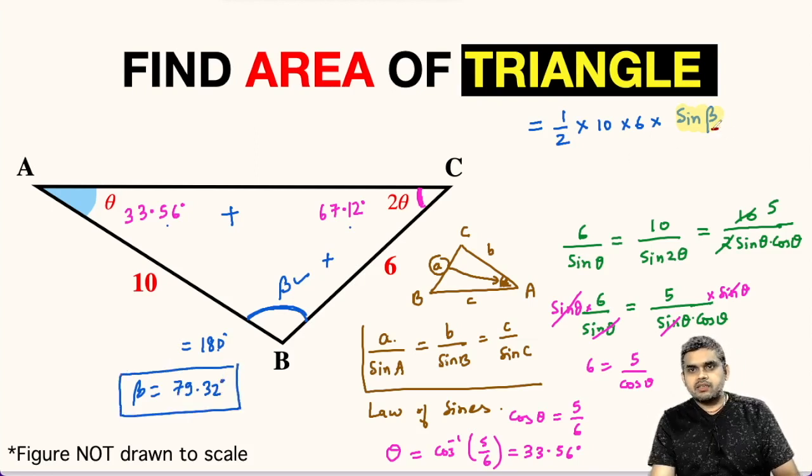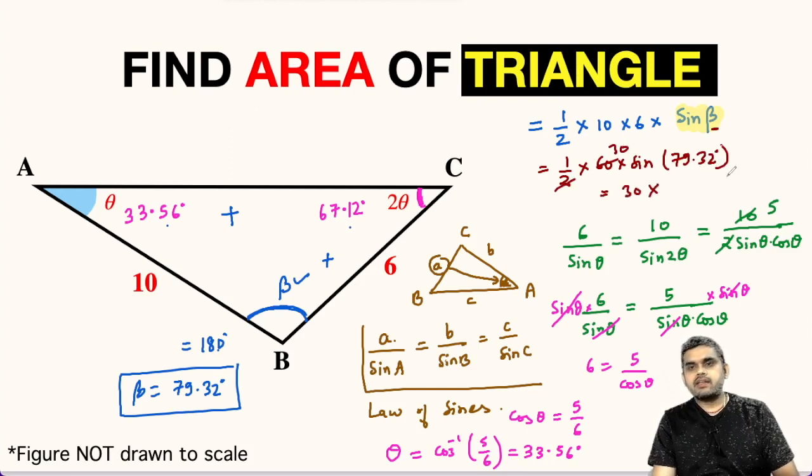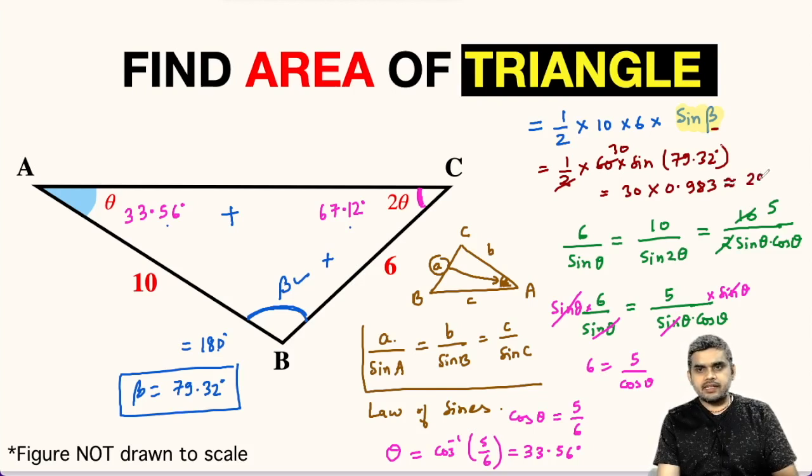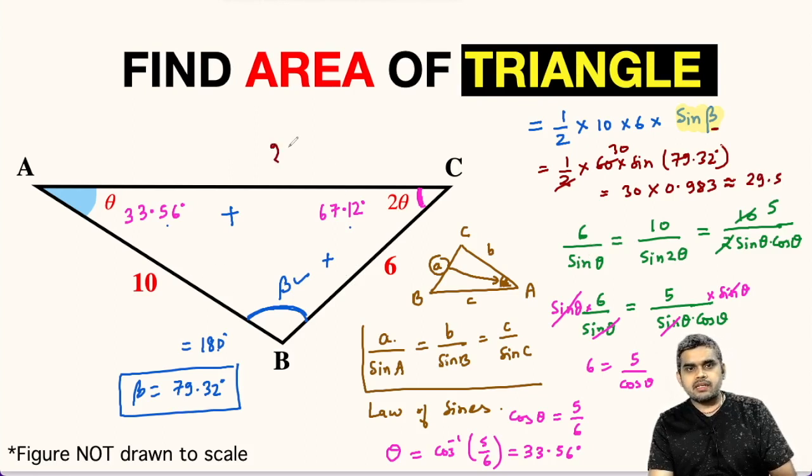Now we have the value of beta, so we can directly compute the area of the triangle. This will be half times 10 times 6, which is 60, times sine of 79.32 degrees. This will cancel, so 30 times sine 79.32 degrees, which is approximately 0.983. We will take up to three decimal places. On multiplying this, we will get approximately 29.5. So the area of triangle ABC is approximately 29.5 square units.